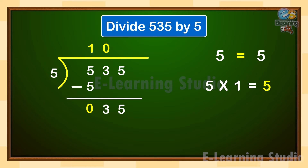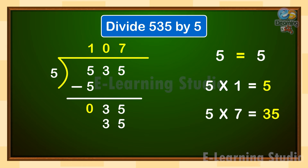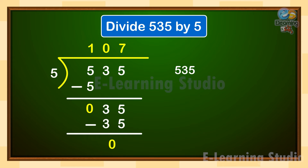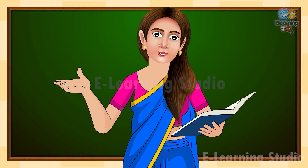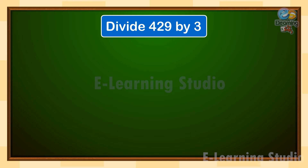5 goes into 35 seven times. Write 7 as the new digit of the quotient on the top. Write the product — 5 sevens are 35 — below 35, and subtract to get 0. So 535 divided by 5 equals 107. Let us understand with the help of other examples. Let us divide 429 by 3.